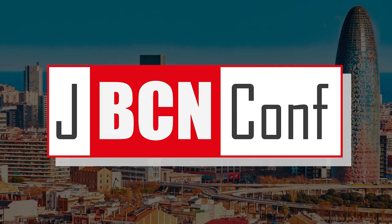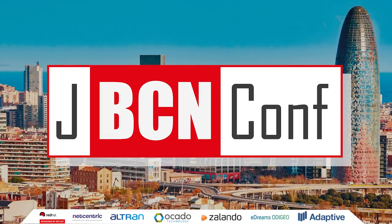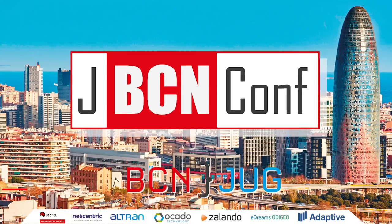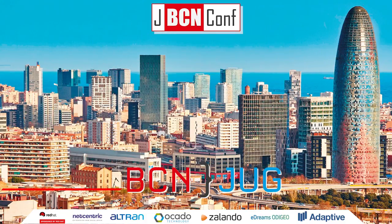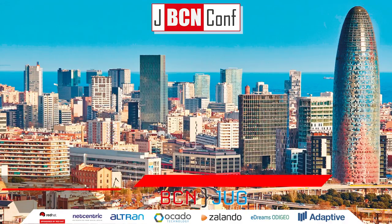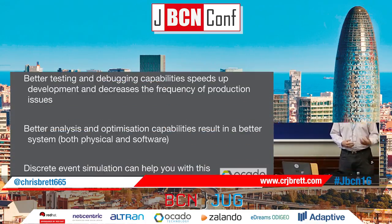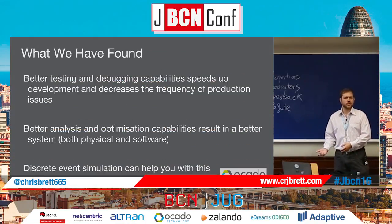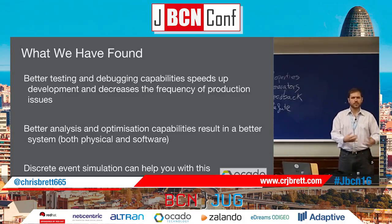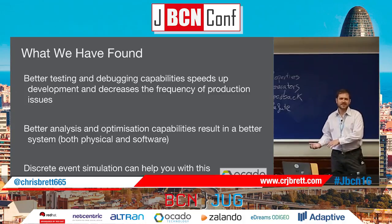What we found at Ocado using simulations is that better testing and debugging capabilities speeds up development as well as decreasing the frequency of production issues. We have a bit of a hard time convincing people that better testing actually speeds up development, but if you think about the amount of time you spend debugging issues, if you can speed up that process then you can actually produce a solution faster. It's something that project managers sometimes struggle to accept, but we've been trying to push for that.